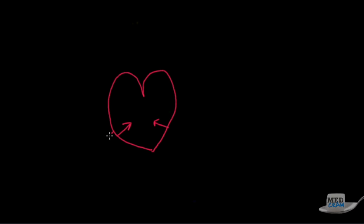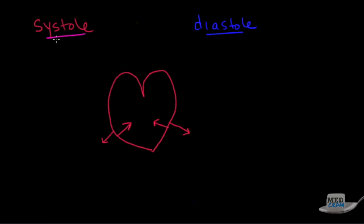Now I want to talk about the heart itself. The heart is a pump, but it's not your typical swimming pool pump that just runs continuously. It actually has two very distinct actions: active contraction and active relaxation. It is this active relaxation that is the most misunderstood. There are two phases of this pump — a two-stroke pump — where one phase is called systole and the other is called diastole. Systole is where there is active contraction; diastole is when there is active relaxation.